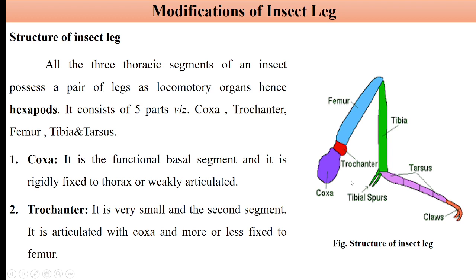A typical insect leg consists of five segments. First is the coxa — it is the first and basal segment, fixed to the thorax or weakly articulated. Then there is a smallest segment called trochanter, present between the coxa and femur. Then there is the longest and strongest segment, the femur, which is the third segment. Then there is the tibia, the fourth segment, which may be equal to or larger than the femur. At its end, the tibia possesses tibial spurs, which are taxonomically very important and used for identification of some insects.